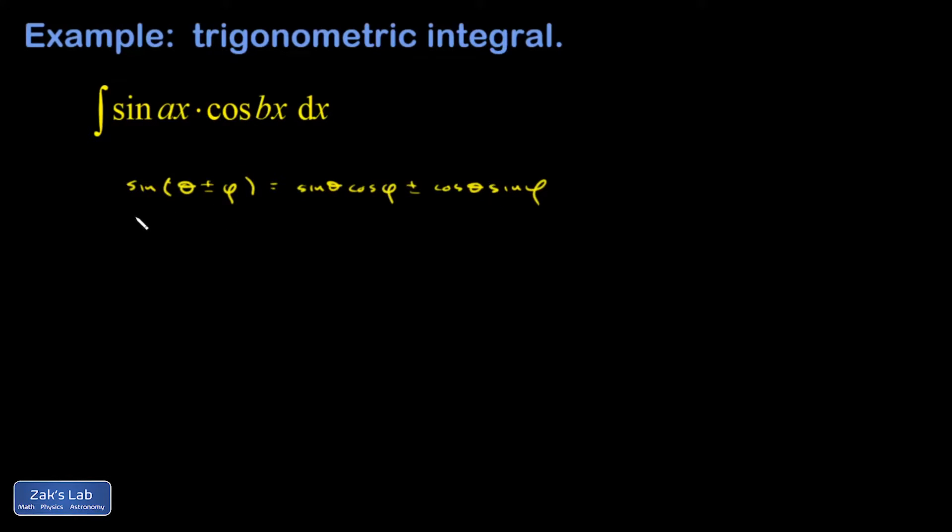And that splits into two different identities. The sine of theta plus phi is sine theta cosine phi plus cosine theta sine phi. And the sine of theta minus phi is sine theta cosine phi minus cosine theta sine phi.